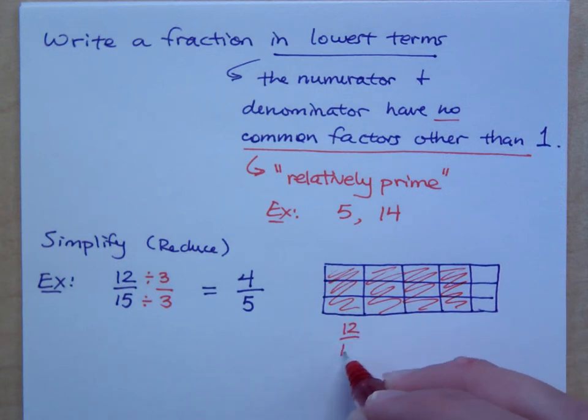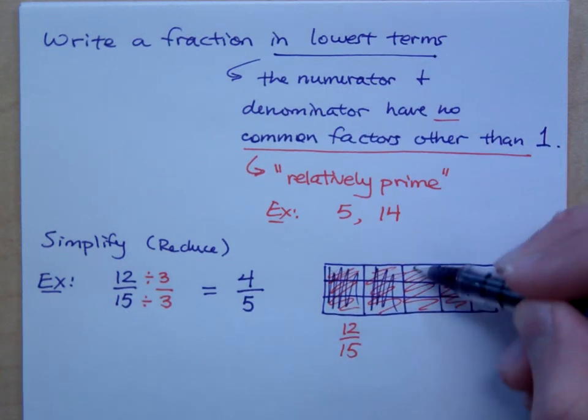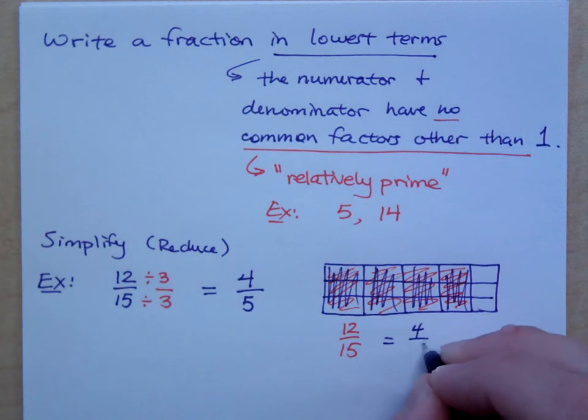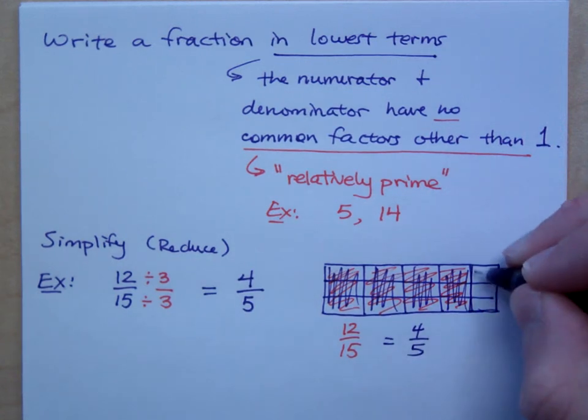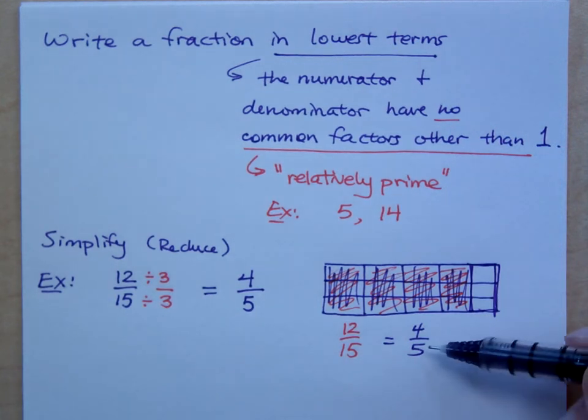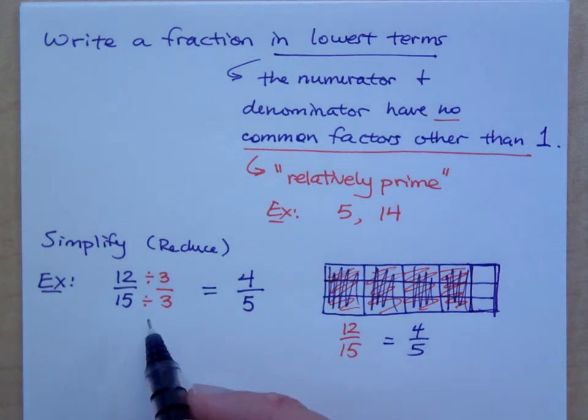So you see that 12 out of 15 is the same as me coloring in 1, 2, 3, 4 out of the 5 bigger chunks here. Do you all agree? It's the same amount. These are equivalent fractions. But 4 over 5, 4/5, is reduced from 12/15 because I divided by that common factor.